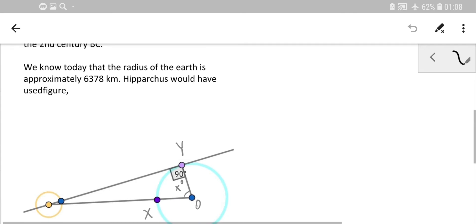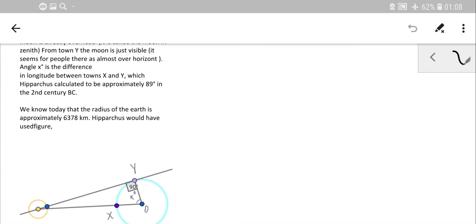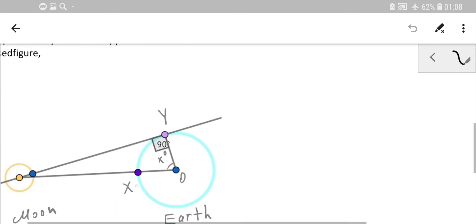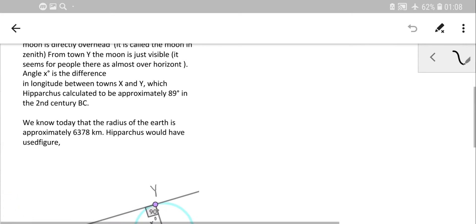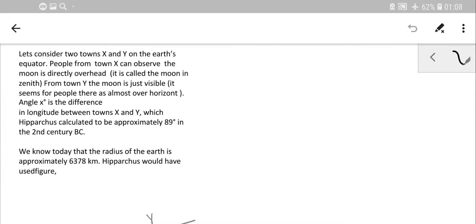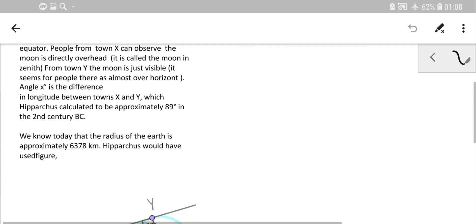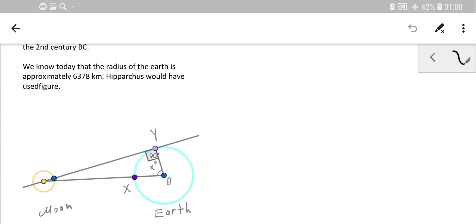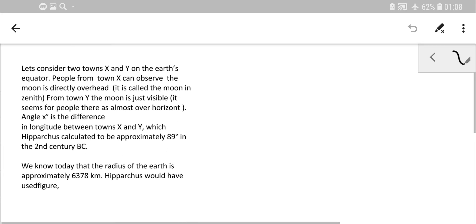Let's consider two towns X and Y on the equator. For people in town X, the moon is at zenith—directly overhead. From town Y, the moon appears almost over the horizon, just barely visible.